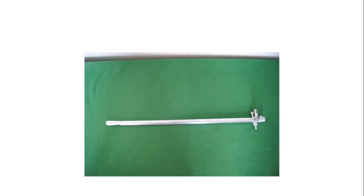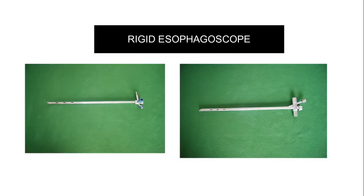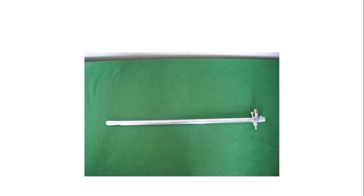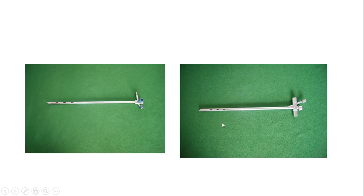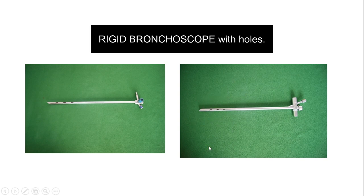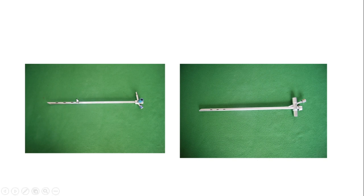This is the esophagoscope and this is the bronchoscope — it is very important to differentiate them. At the lower distal end of the bronchoscope, there are holes. The function of these holes is that when the bronchoscope is placed into one bronchus, the contralateral lung still needs ventilation. The holes allow air to pass so that the other lung is also ventilated.